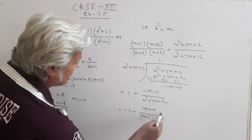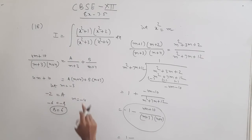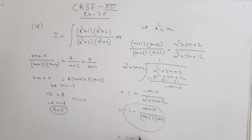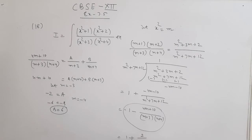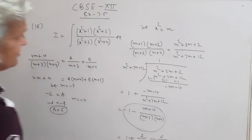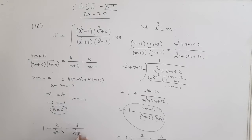So the full expression becomes 1 minus (minus 2 over (m plus 3)) minus (6 over (m plus 4)), which simplifies to 1 plus 2 over (m plus 3) minus 6 over (m plus 4). Substituting back m equals x², this is 1 plus 2 over (x² plus 3) minus 6 over (x² plus 4).